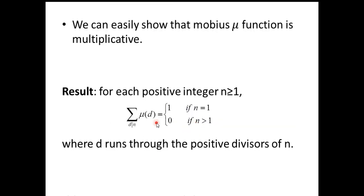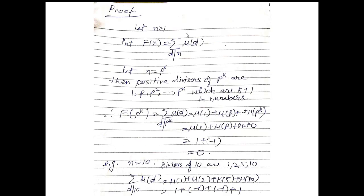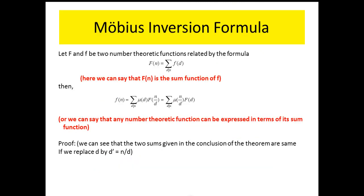This result says Σ μ(d) = 0 when n > 1. For example, take n = 10. The divisors of 10 are 1, 2, 5, 10. So the sum is μ(1) + μ(2) + μ(5) + μ(10) = 1 + (−1) + (−1) + 1, since 10 = 2×5 gives (−1)² = 1. This gives 2 − 2 = 0, confirming the result.